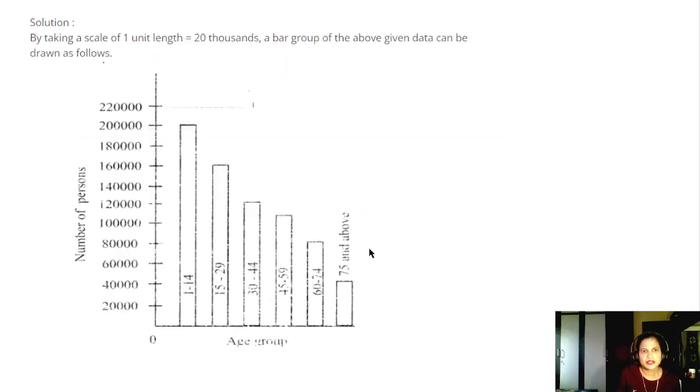Now we will look for the bar graph. By taking a scale of 1 unit equal to 20,000 already given, so age group is written on the x-axis and the number of persons, that is 20,000, 40,000, 60,000, 80,000. Keep on increasing 20,000. Unit length of the scale is taken, 1 unit equal to 20,000. That's why it is like this. After that you mark this.